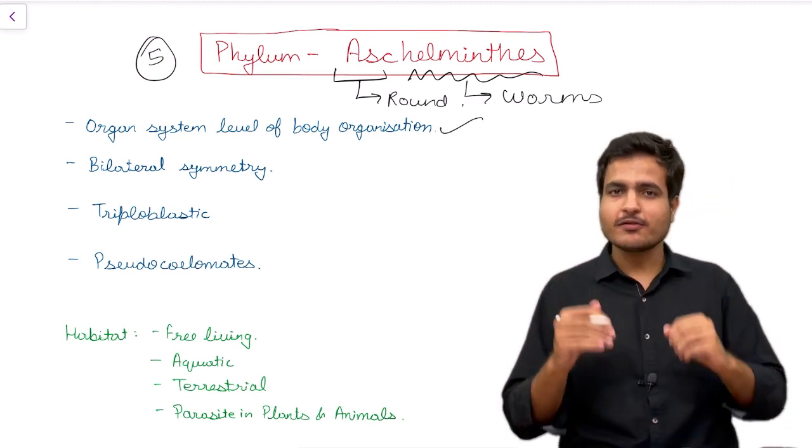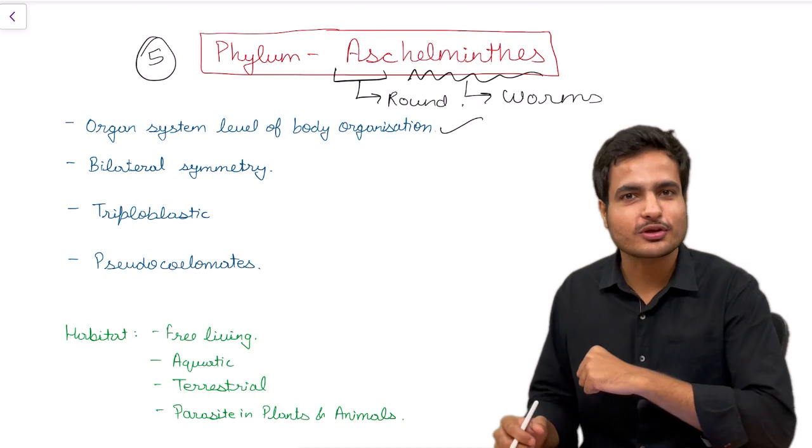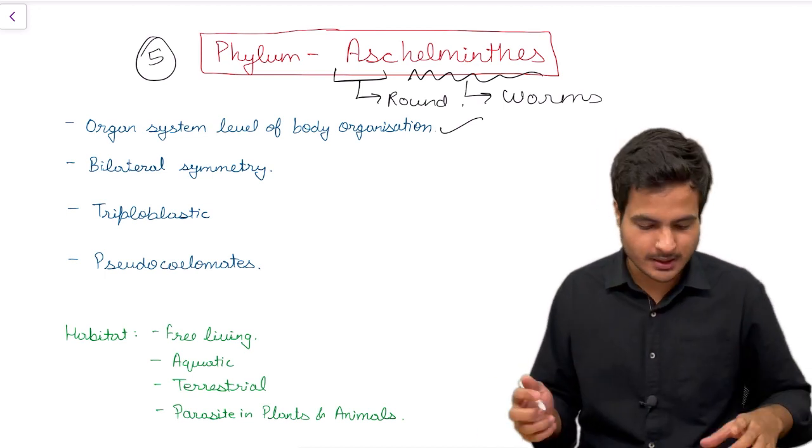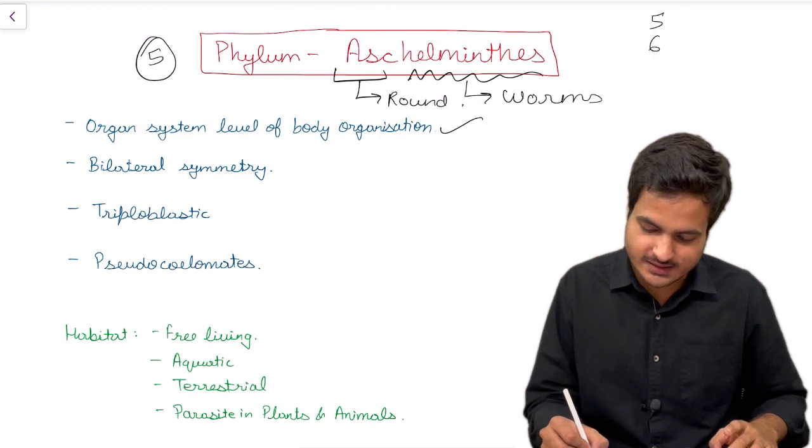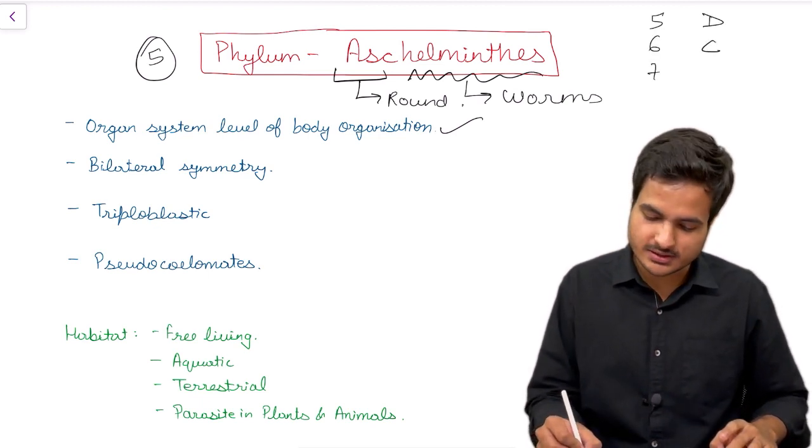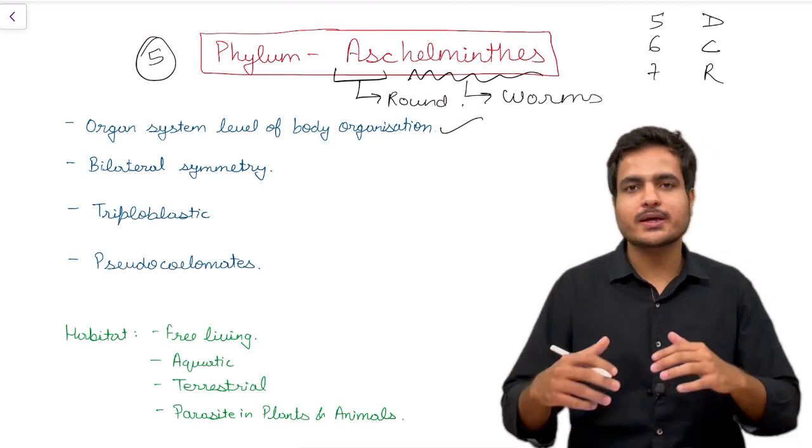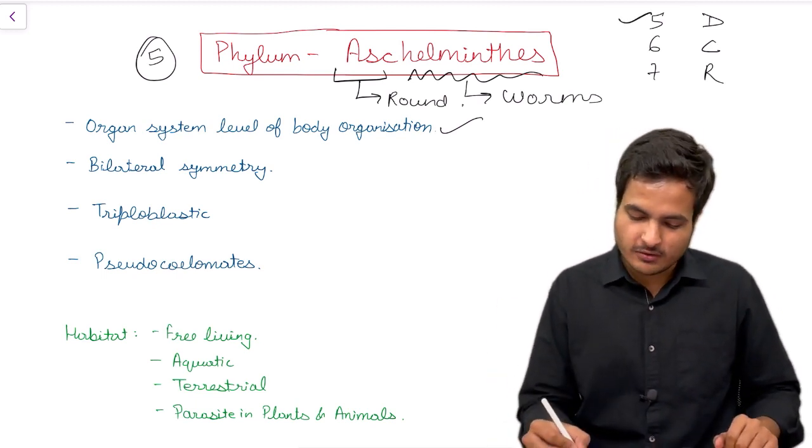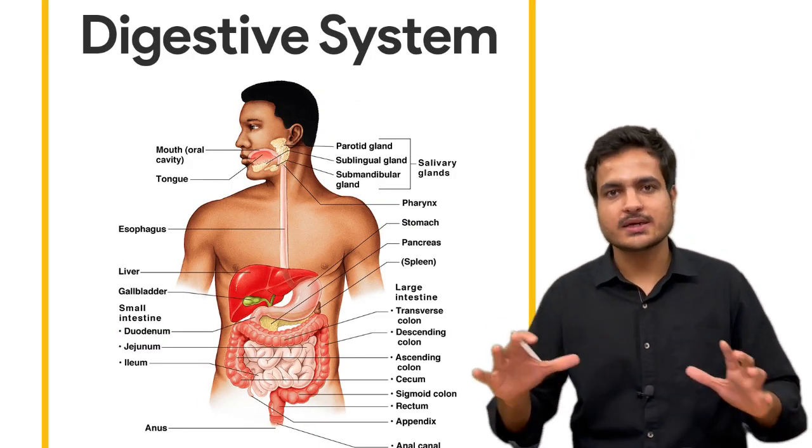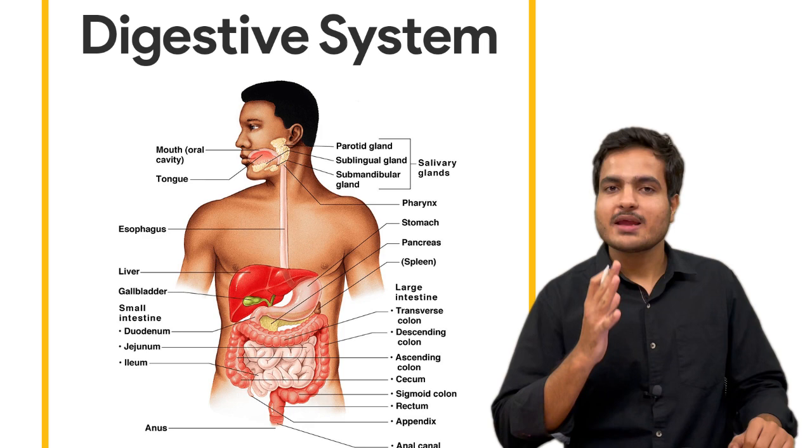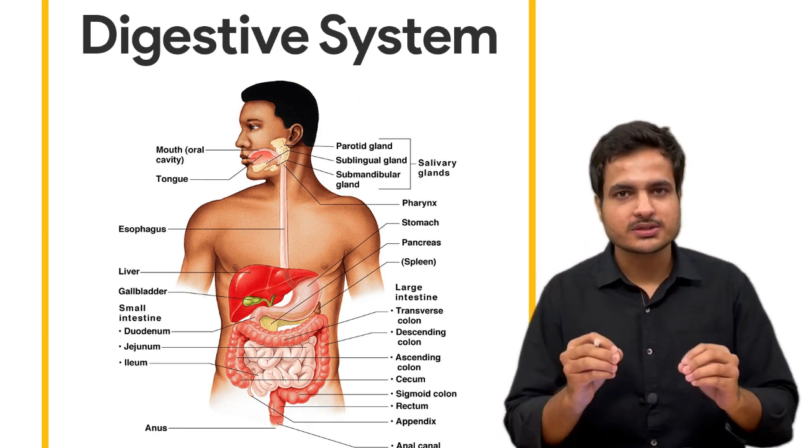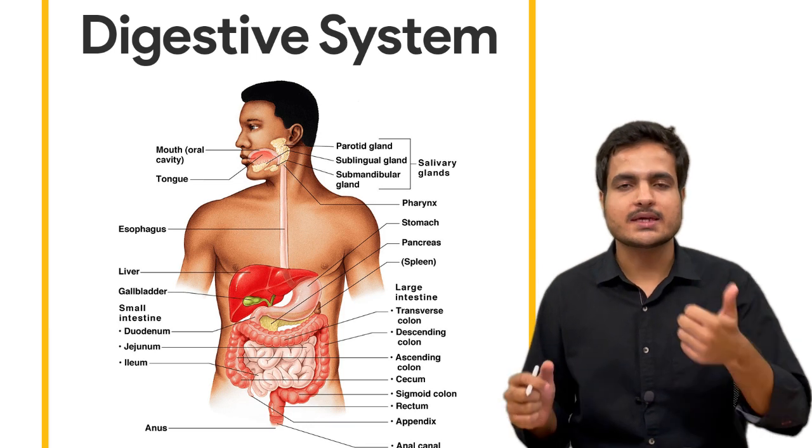If they have organ system level of organization, which is the first organ system that is fully developed? We have already learned that phyla five, six, seven have digestive system, circulatory system, and respiratory system individually completely developed. So from the fifth phylum onwards we have digestive system completely developed in each and every phylum. Therefore in Aschelminthes the first organ system which is completely developed is digestive system.